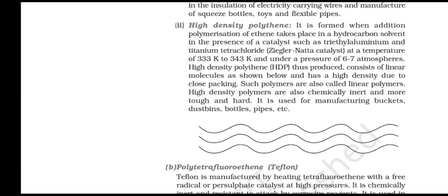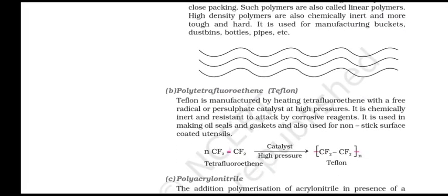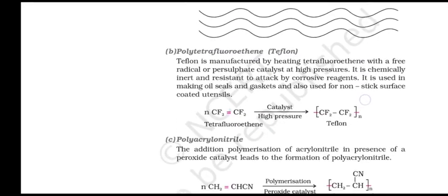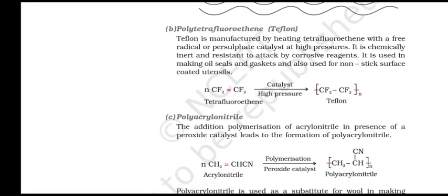High density polythene (HDPE): it is formed when addition polymerization of ethene takes place in a hydrocarbon solvent in the presence of a catalyst such as triethylaluminium and titanium tetrachloride (Ziegler-Natta catalyst) at a temperature of 333 K to 343 K and under a pressure of 6 to 7 atmospheres. HDPE thus produced consists of linear molecules. It has high density due to close packing, so these polymers are also called linear polymers. HDPE is chemically inert, more tough and hard, and is used for manufacturing buckets, bins and bottles.